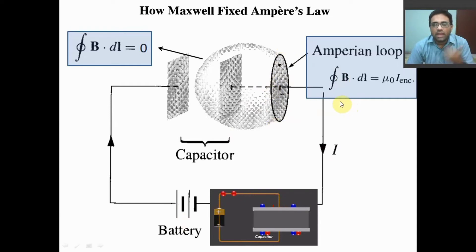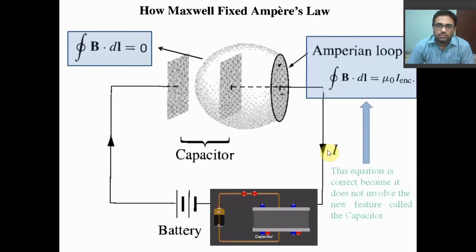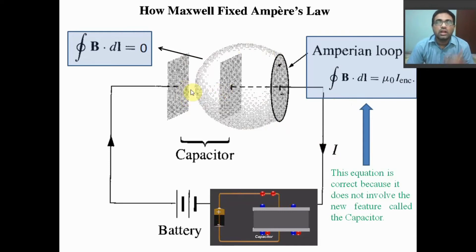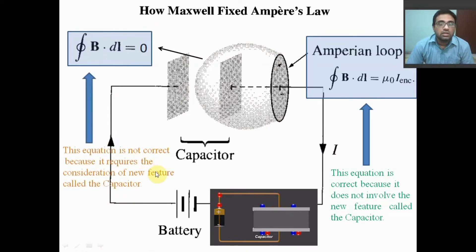Ampere's law can be applied for this current — this is correct. But if we consider another surface, a balloon-shaped surface that is inside the capacitor, there is no conduction current. So apparently there is no current. If we apply Ampere's law in that case, it seems to be zero — but that is not correct because we are not considering the effect of the capacitor. This is the new feature which we are not considering in this equation.